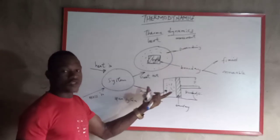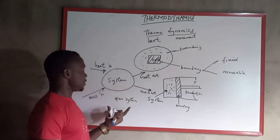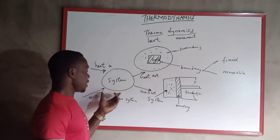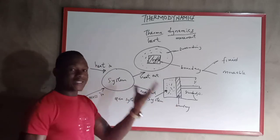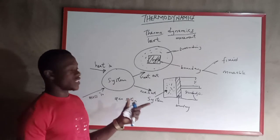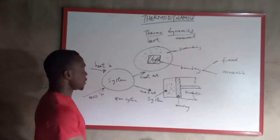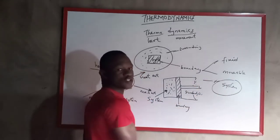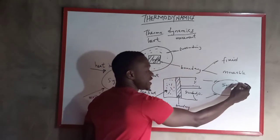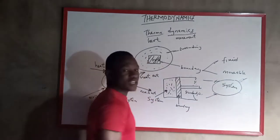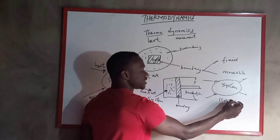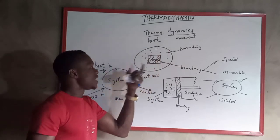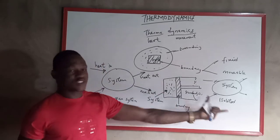The opposite of the open system is the isolated system, not the closed system. For an open system, heat and mass can go in and leave. But for an isolated system, heat and mass cannot go in, and heat and mass cannot leave the system. The boundary prevents any exchange — no mass and no heat can penetrate. This system is isolated from the surrounding, so there is no interaction between the system and the surrounding.